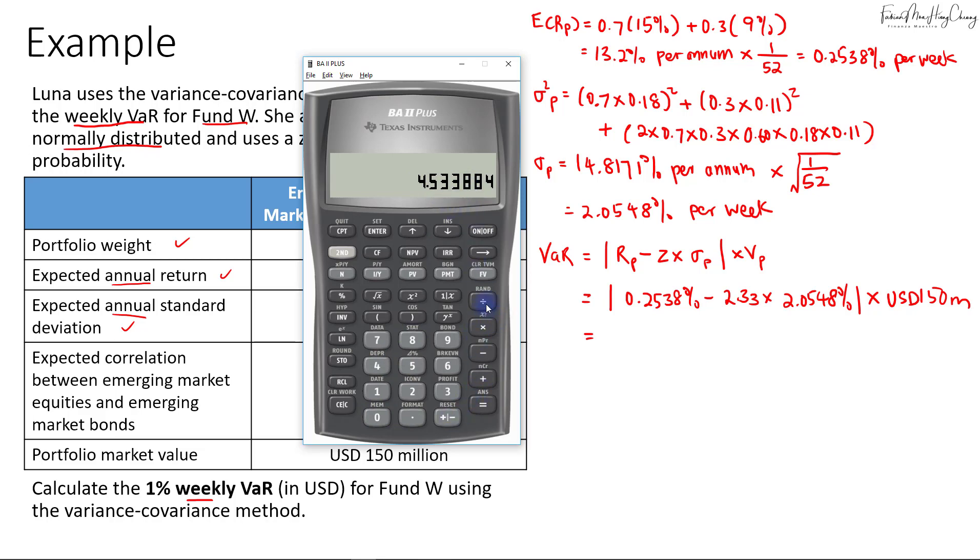It's in percentage, so divide by 100, then multiply by 150 million, which is the market value of the portfolio. This gives us about 6.8 million. That will be our VaR.